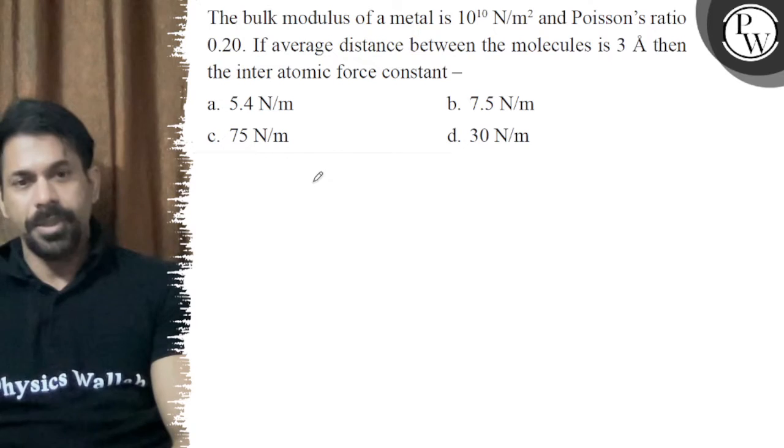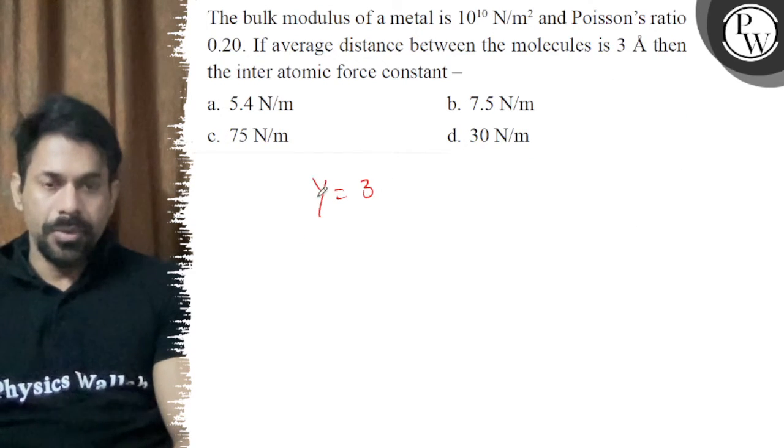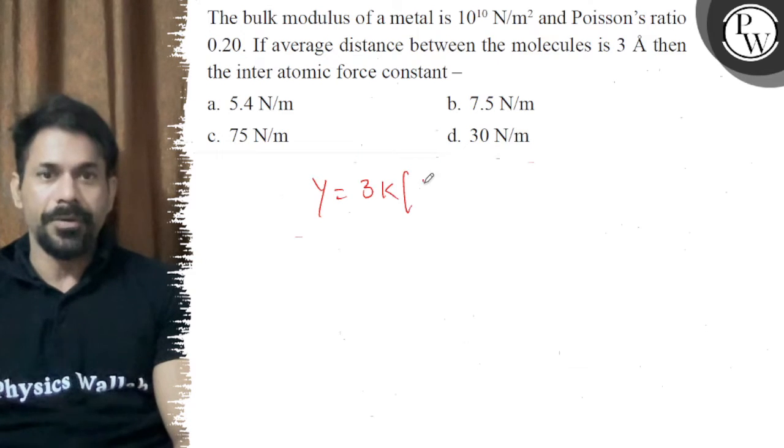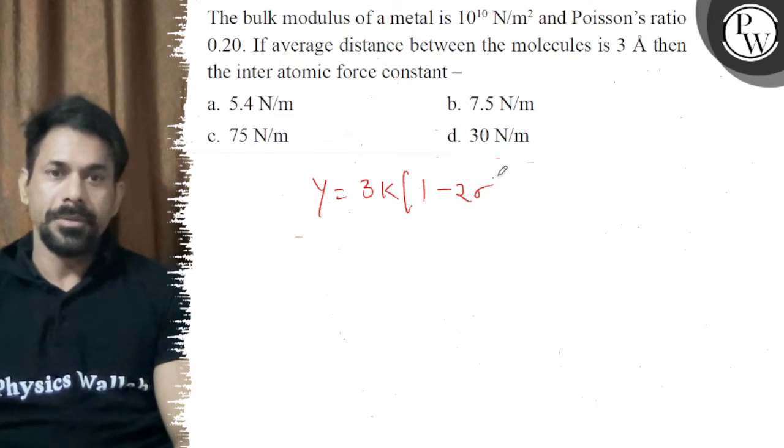We can see the relation of the bulk modulus. The formula is Y equals 3K times (1 minus 2 sigma), where Y is Young's modulus, K is bulk modulus, and sigma is Poisson's ratio.